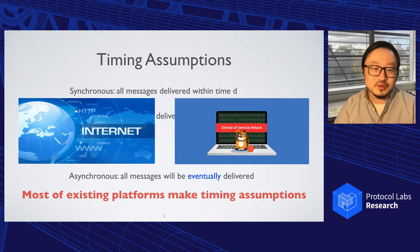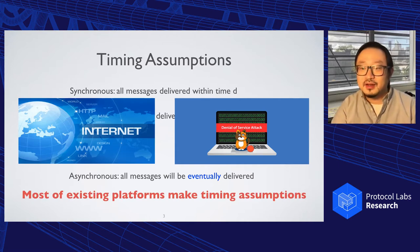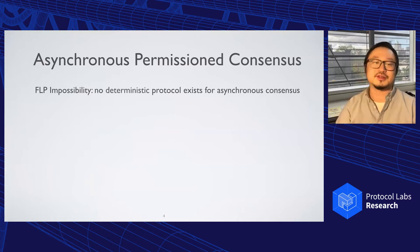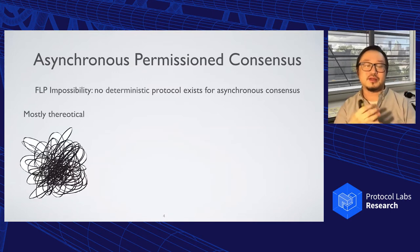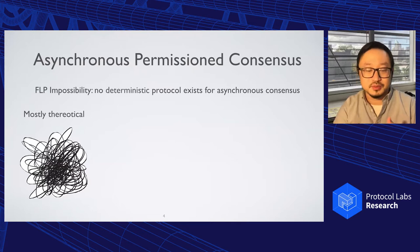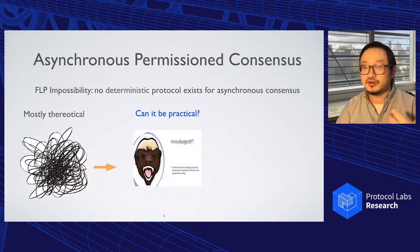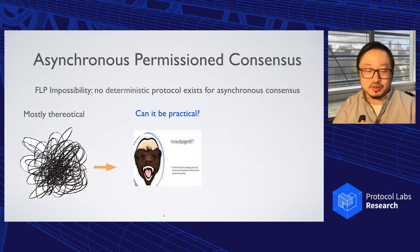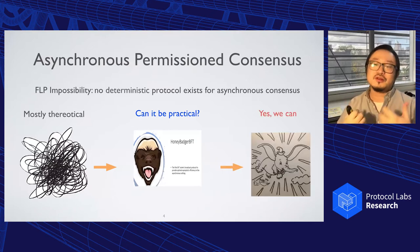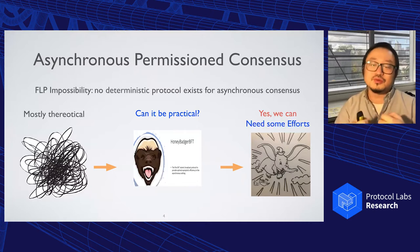Unfortunately, most of the deployed consensus protocols are not asynchronous — not because they don't want to be, but simply because it's complicated. The famous FLP impossibility already hinted that no deterministic asynchronous protocol can ever exist. So over the years, people spent a lot of effort designing randomized protocols trying to circumvent the impossibility. But those classical protocols are mostly with very high complexity, and very few of them have ever been implemented until very recently. Probably the most visible result is HoneyBadger BFT — they optimized a classical protocol and showed an implementation.